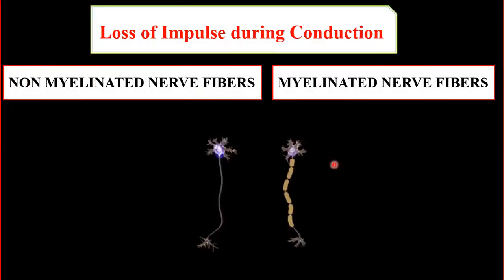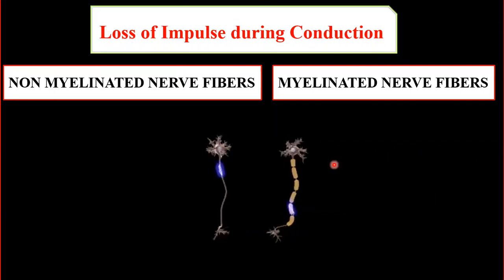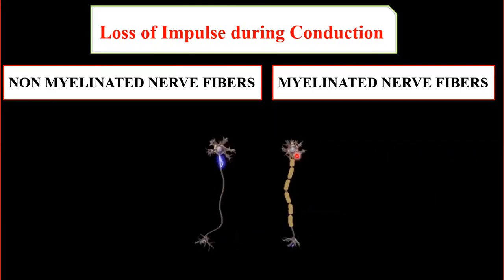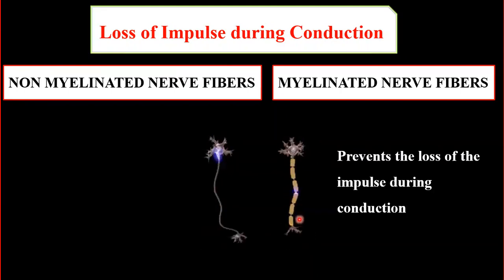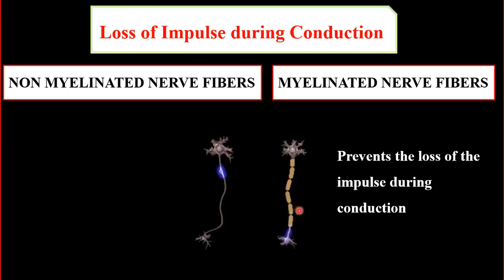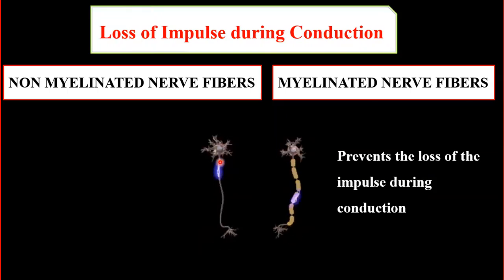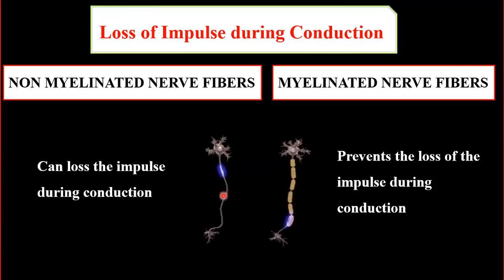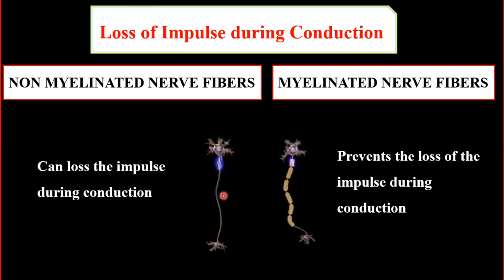Regarding loss of impulse: in myelinated nerve fibers, loss of impulse is low because the myelin sheath and nodes of Ranvier prevent impulse loss. In non-myelinated nerve fibers there is no such protection — the myelin sheath provides cushion and support, and without it, loss of impulse transmission can occur.